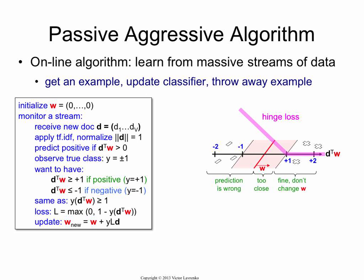So what do you do then? You just take this penalty L that you've computed and update the weight vector by adding a small proportion of d, that's the example that you received, the vector that you received, to the weight vector. And you're going to weigh it by the loss. So the loss tells you how far away you are, and we'll see what effect this has.